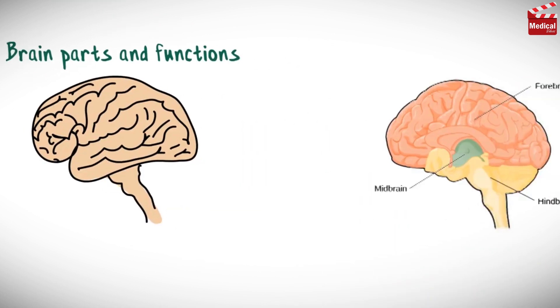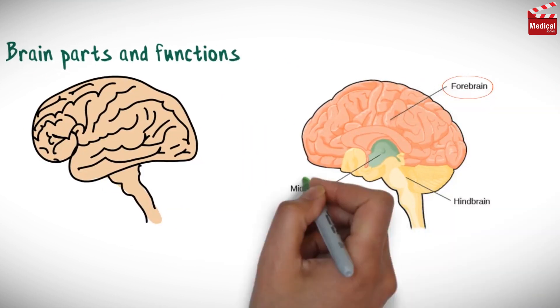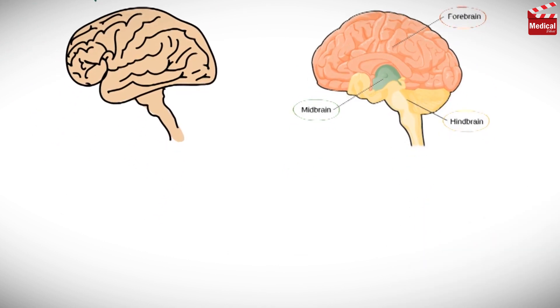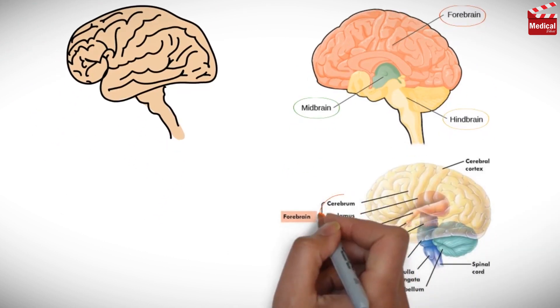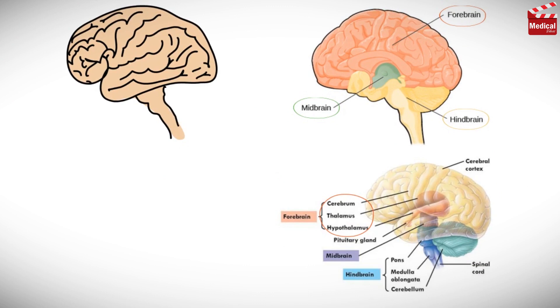The major divisions of the brain are the forebrain, midbrain, and hindbrain. The forebrain consists of cerebrum, thalamus, and hypothalamus. The hindbrain consists of cerebellum, pons, and medulla oblongata.